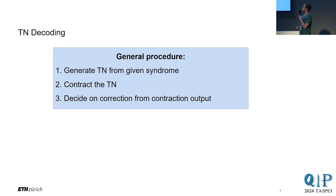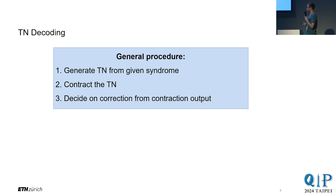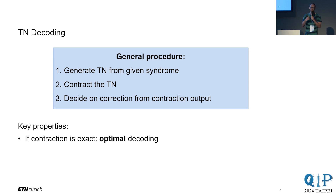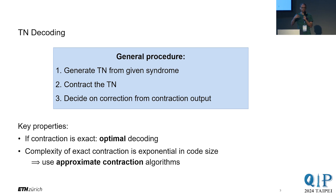Very broadly speaking, the general procedure of a tensor network decoder goes like this. The input is a syndrome bit string. You generate some sort of tensor network from that syndrome bit string, you contract the tensor network, and given that contraction result you decide on a correction operation. Steps one and three are computationally quite trivial, and the real meat of the decoder lies in that tensor network contraction. If you do this contraction exactly without any numerical approximation, the tensor network decoder gives you the optimal decoder — the decoder that finds the correct correction operation with the highest physically possible probability.